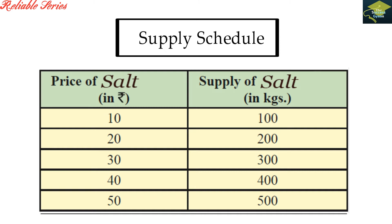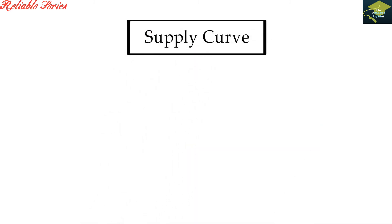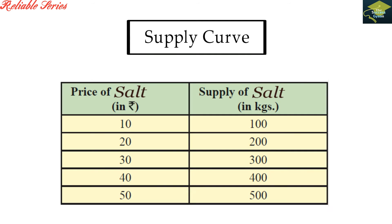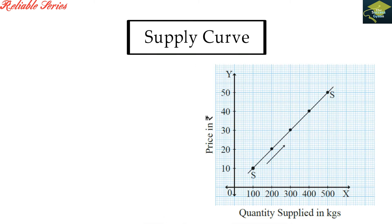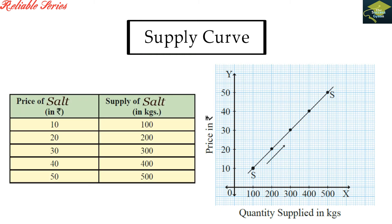अब law of supply को supply curve से समझते हैं. जैसे supply schedule tabular representation था price और quantity supplied का, उसी तरह supply curve एक graphical representation है of price and quantity supplied. अभी हमने जो supply schedule बनाया था, उसी data को graph की form में represent करते हैं. यहाँ x-axis है और y-axis है — y-axis represent करता है price और x-axis represent करता है quantity supplied.